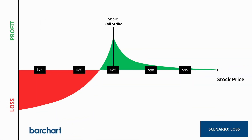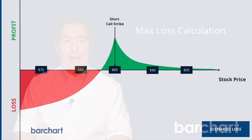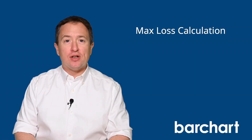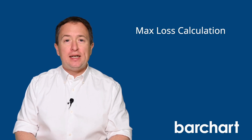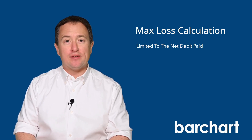On the other hand, if Dollar General's price falls below the long strike at its expiration, your trade will enter its maximum loss condition. The maximum loss of a long call diagonal spread is limited to the net debit paid at the beginning of the trade.